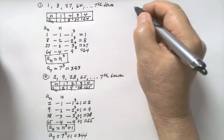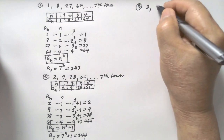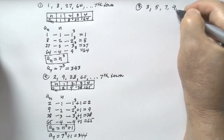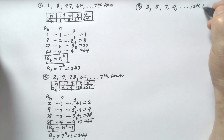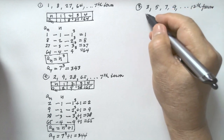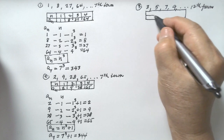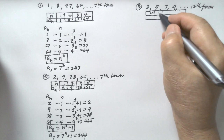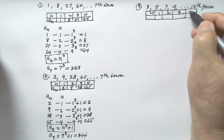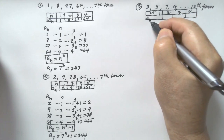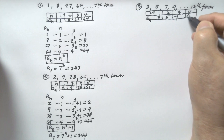Number three: the sequence is 3, 5, 7, 9, and we are asked to find the 12th term. Let's put this in a table. For n: 1, 2, 3, 4. A sub n: 3, 5, 7, 9.